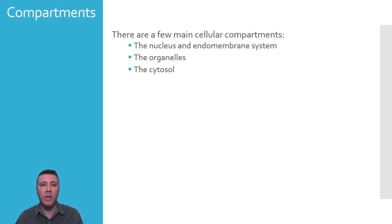The second region includes all of the remaining organelles, such as the Golgi apparatus, mitochondria and chloroplasts, vacuoles and vesicles, lysosomes, and more. Within the cytosol is a wide variety of solutes, all participating in various biochemical reactions that contribute to the sustainment of the cell's life.